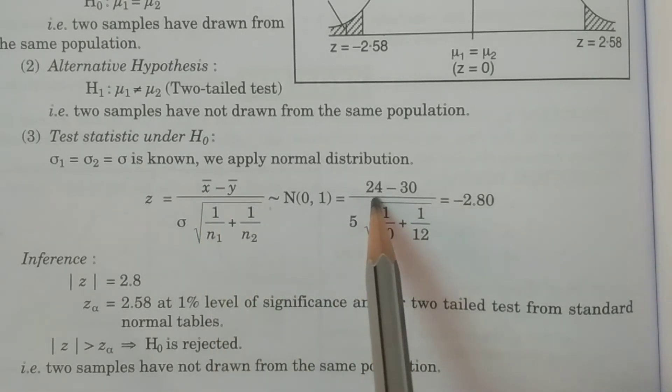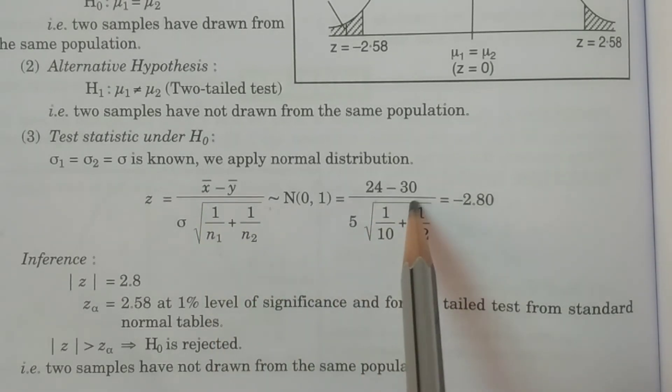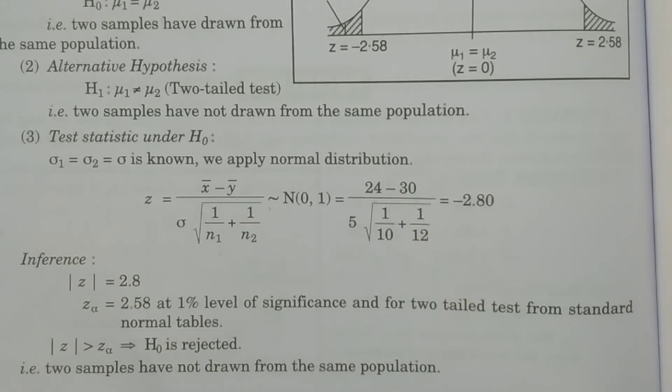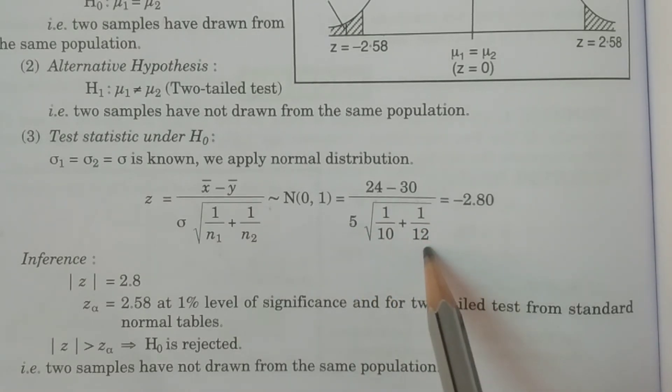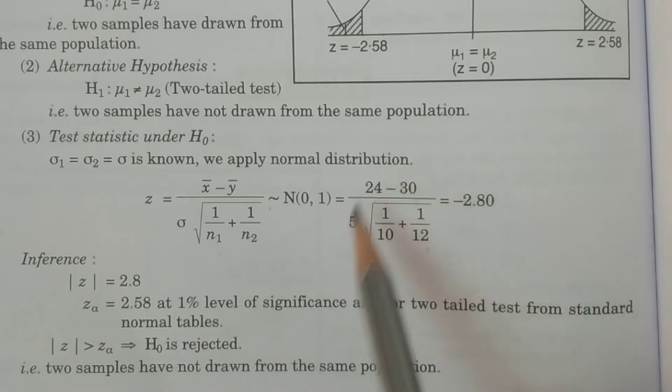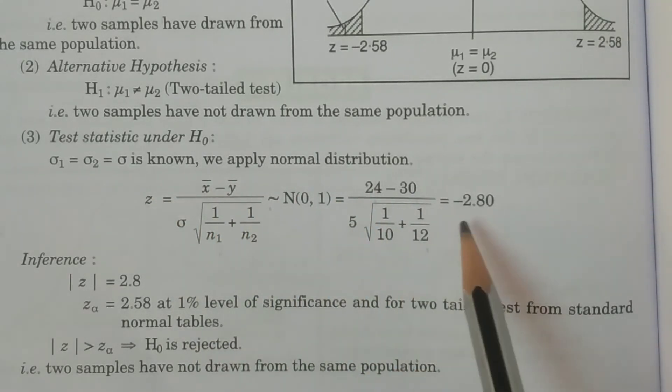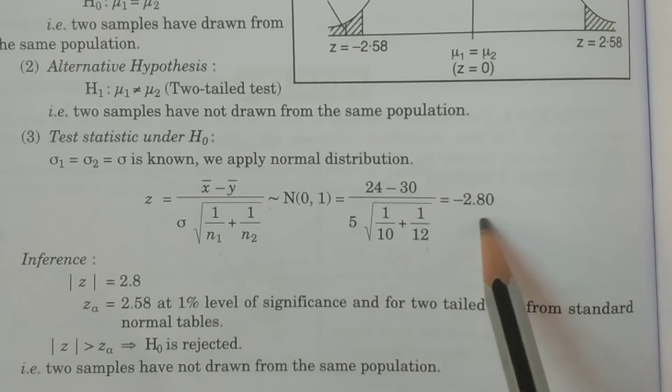What is x bar? 24, y bar is 30, divided by sigma 5 multiplied by square root of 1 by n1, 1 by 10 plus 1 by 12. So, you calculate this value, you will get minus 2.8. So, this is the case where even in small samples case, small sample test, even then, we have to apply if sigma is known, we have to apply the normal distribution. You must be particular about this, right? We have calculated z equals minus 2.8.